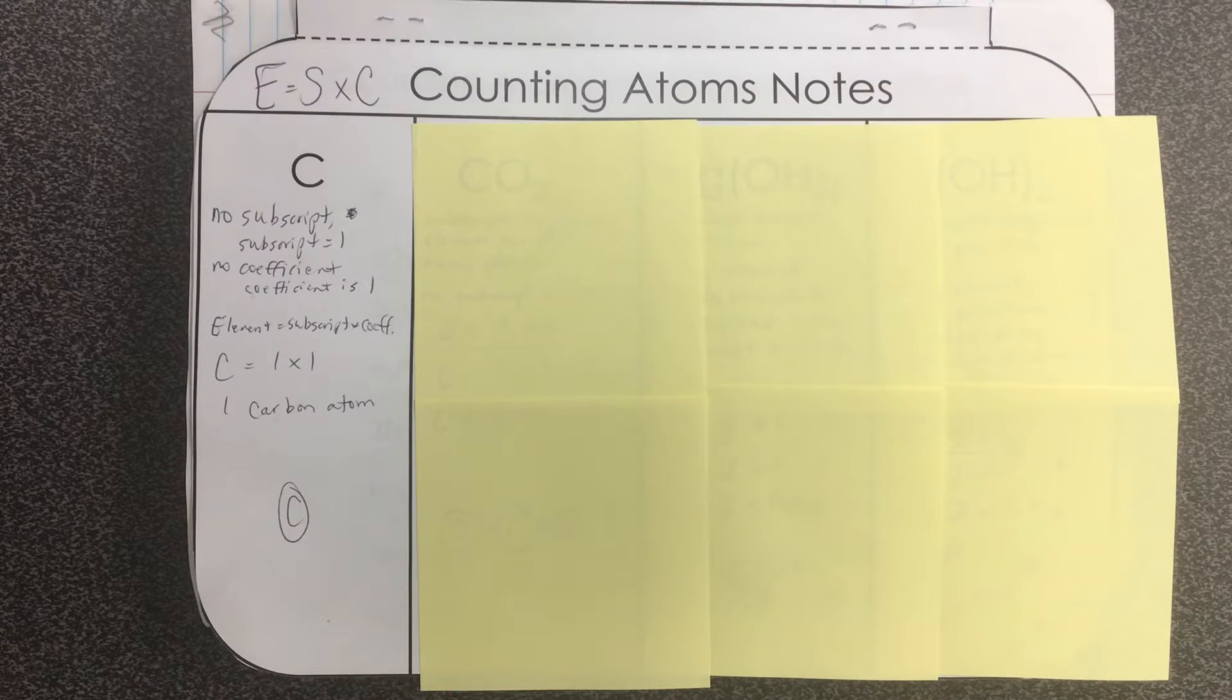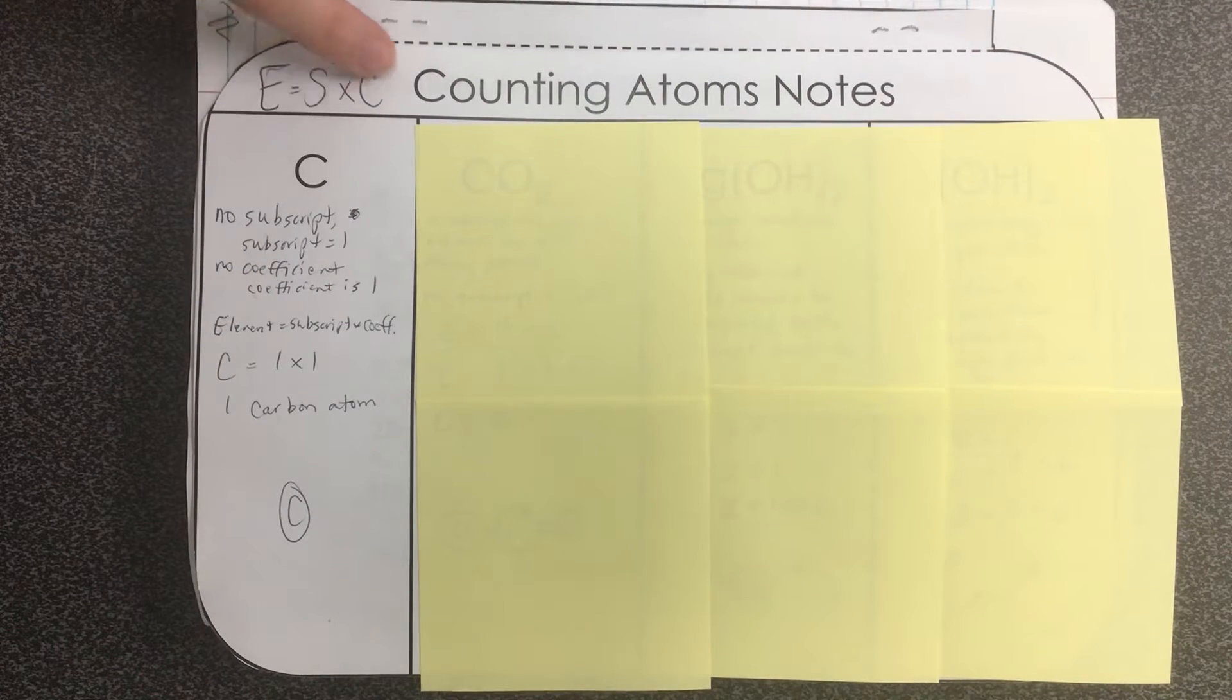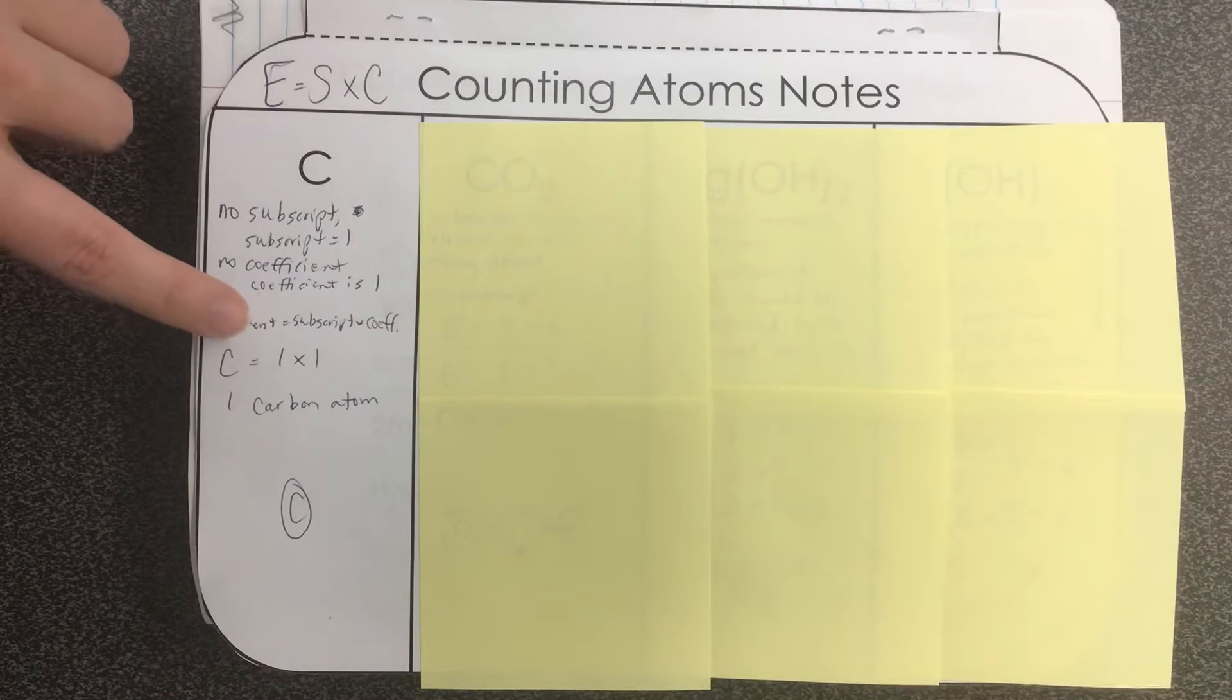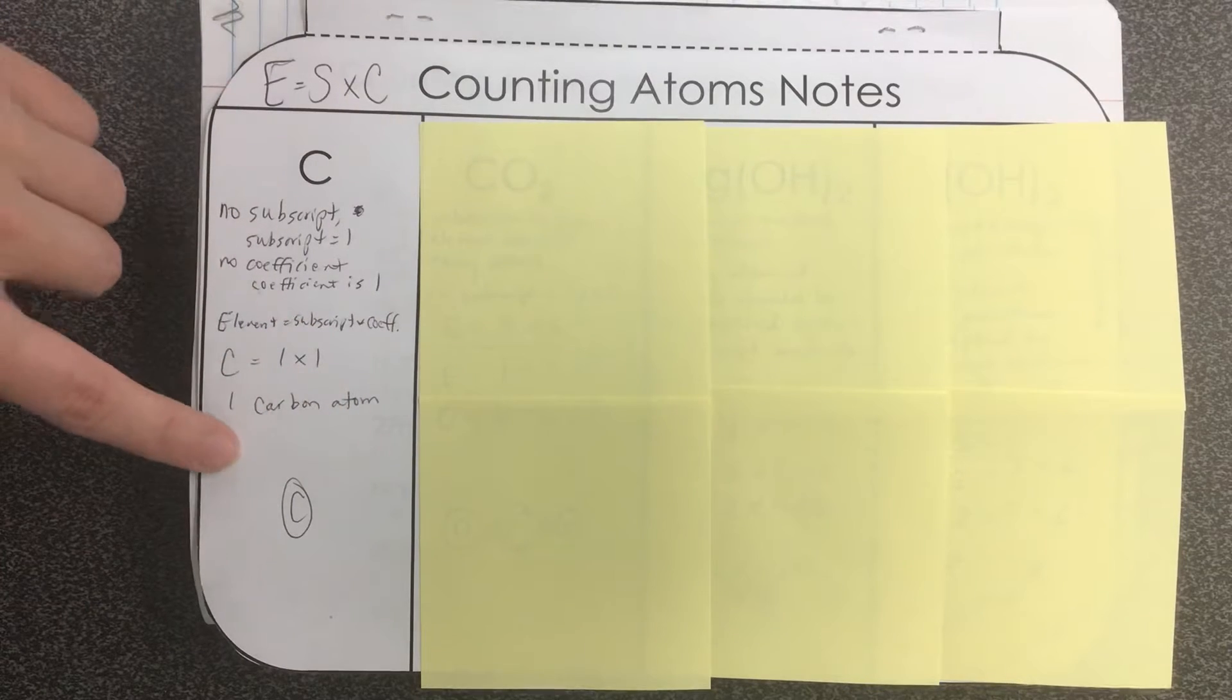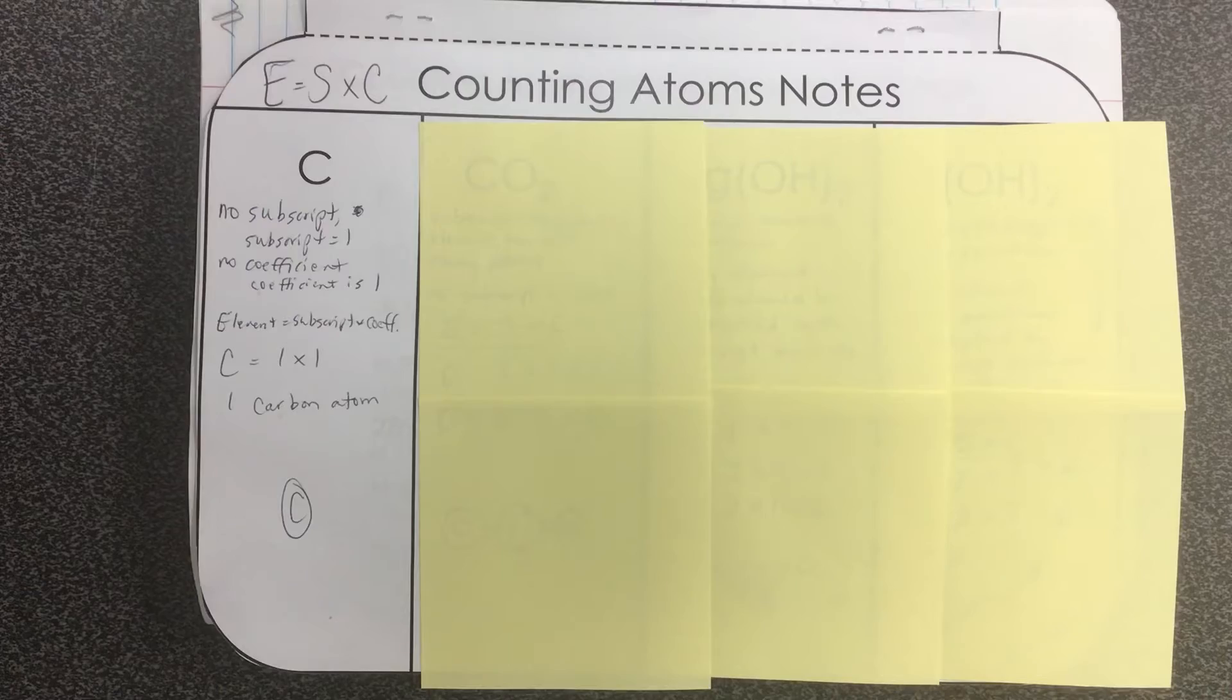There is no coefficient, so the coefficient is also understood to be one. And we're going to use our little equation here. We write our element and do subscript times coefficient. So we have carbon and one times one, we have one carbon atom, and that's what it looks like floating around by itself.